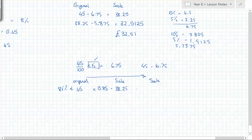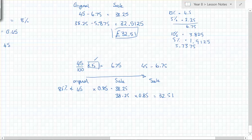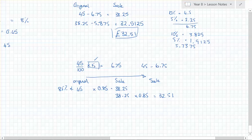Then we do 38.25 times 0.85 again, which gives £32.51. The same answer. A student has another way, but let's finish this one first.